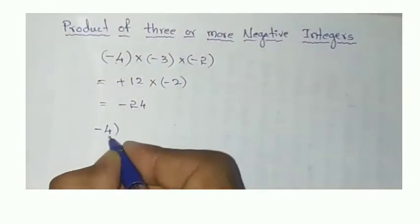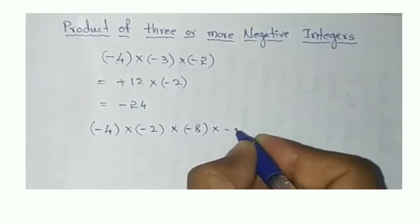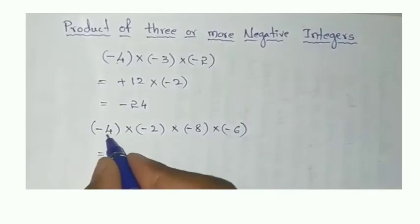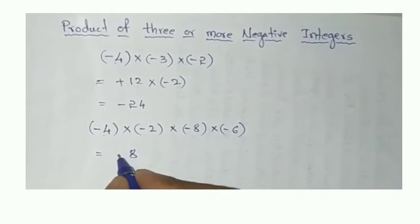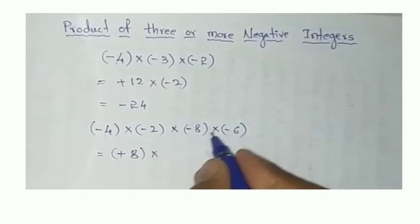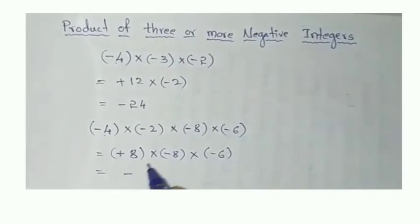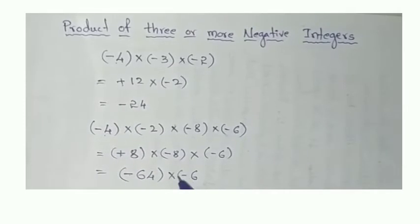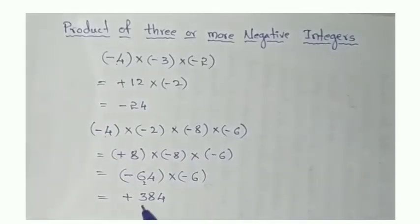Another example: minus 4 into minus 2 into minus 8 into minus 6. First, take two numbers: minus 4 into minus 2 — we get 8, that is plus 8. Then plus 8 into minus 8 into minus 6: plus into minus is minus 8, and minus into minus is plus. 6 fours are 24, carry 2; 6 sixes are 36, so 36 plus 2 is 38 — our answer is 384.